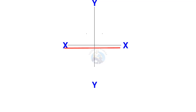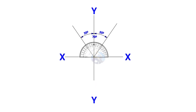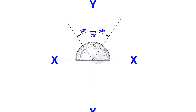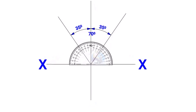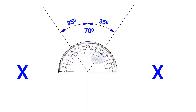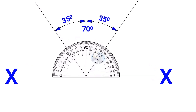Draw line XX and its perpendicular line YY. Since the included angle of the Y branch is 70 degrees, mark 35 degrees on both sides of the axis YY.